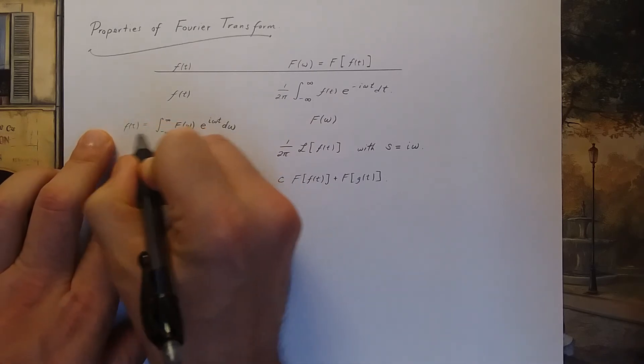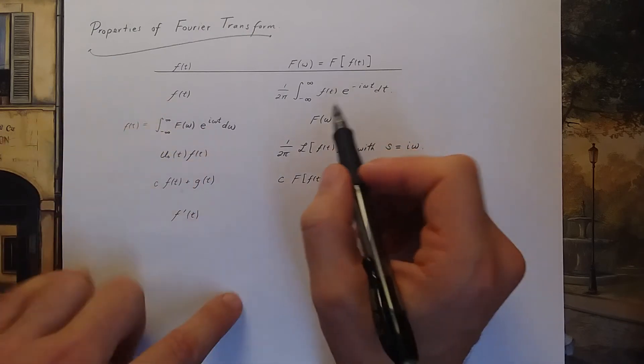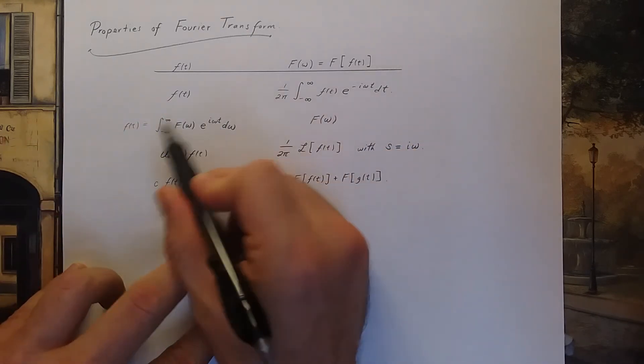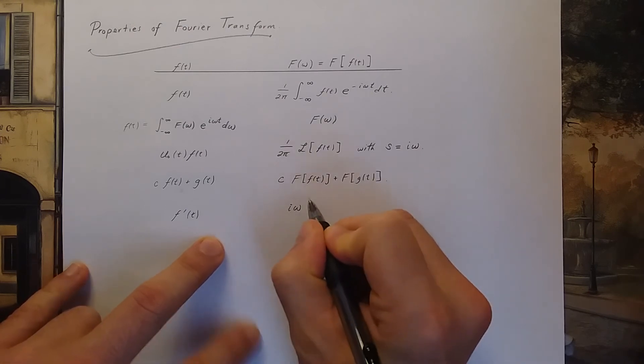So if I take the derivative I get an extra i omega that comes out in front. Meaning this would be i omega times the Fourier transform.